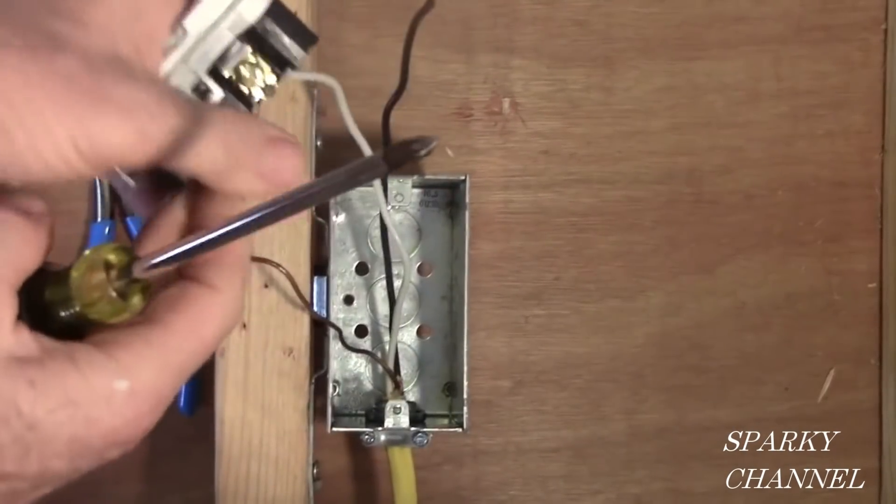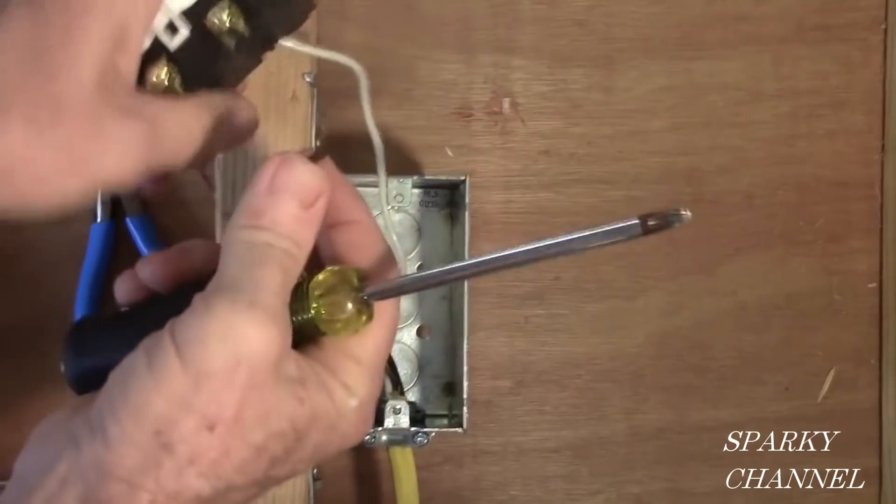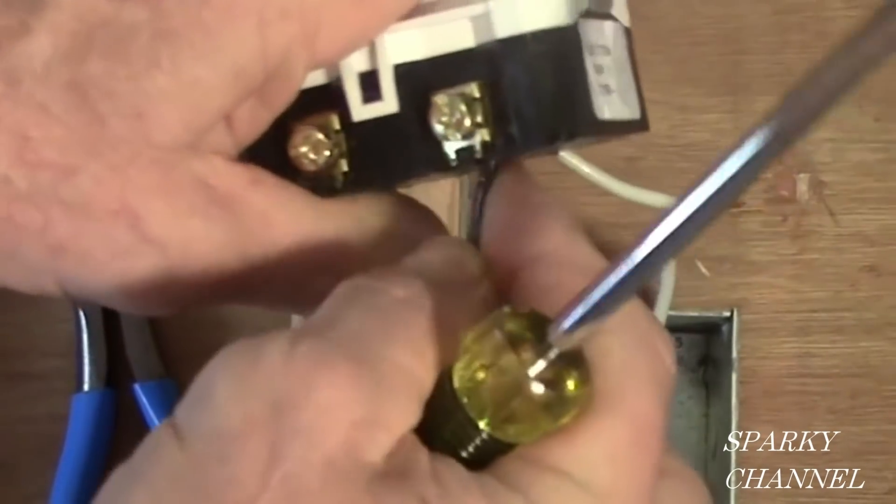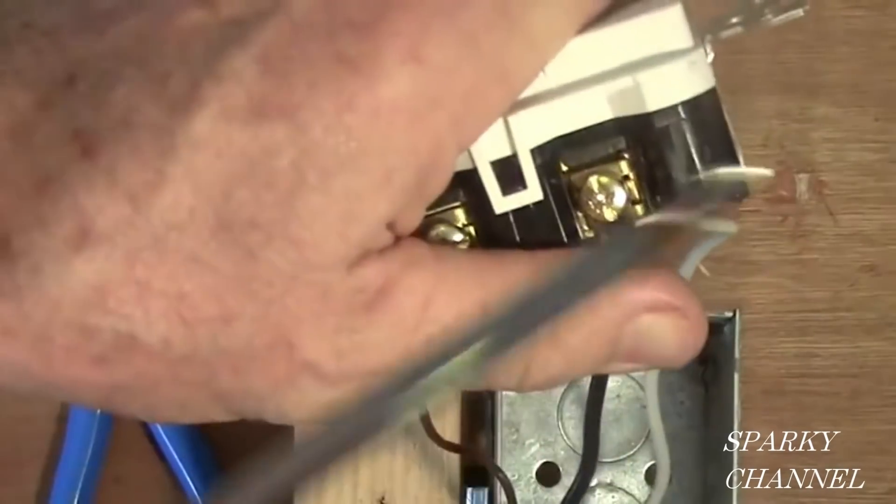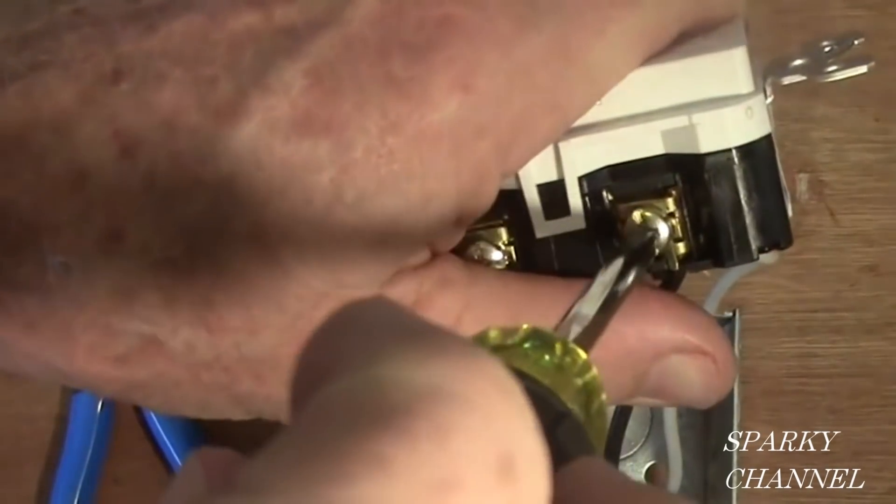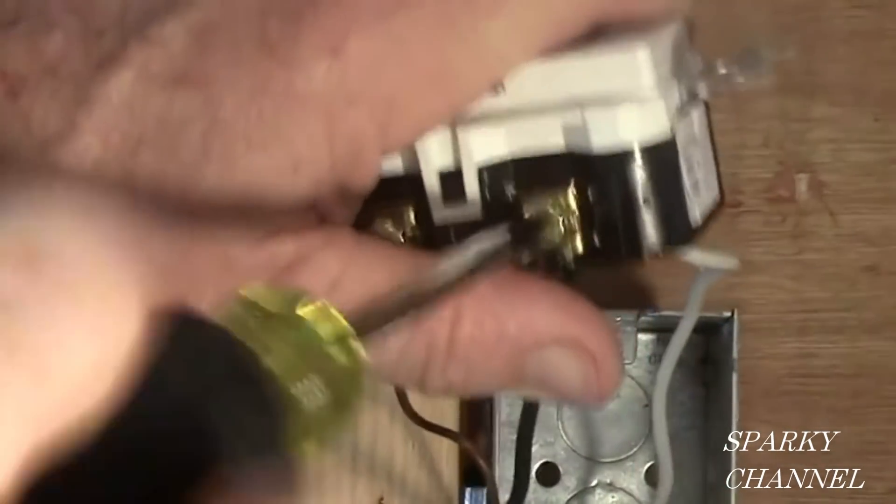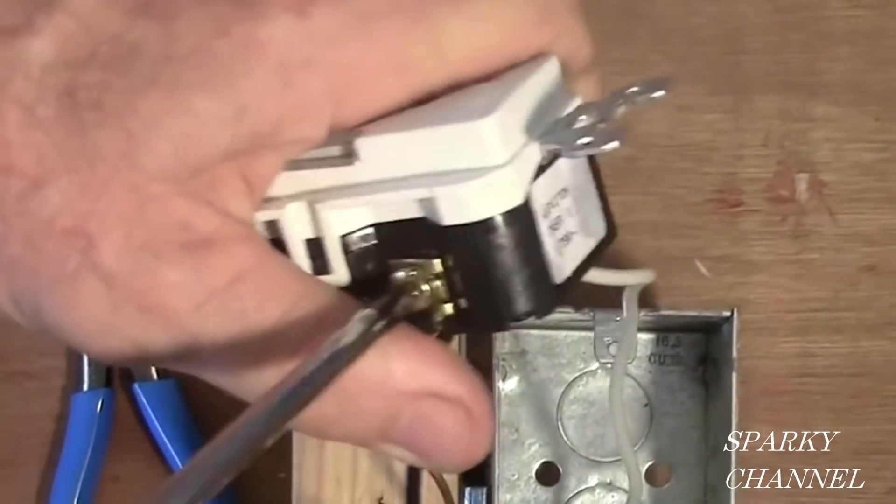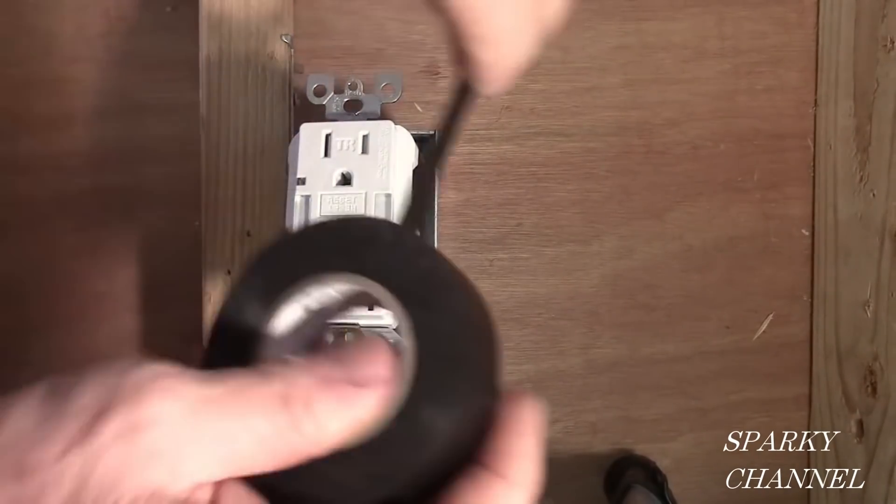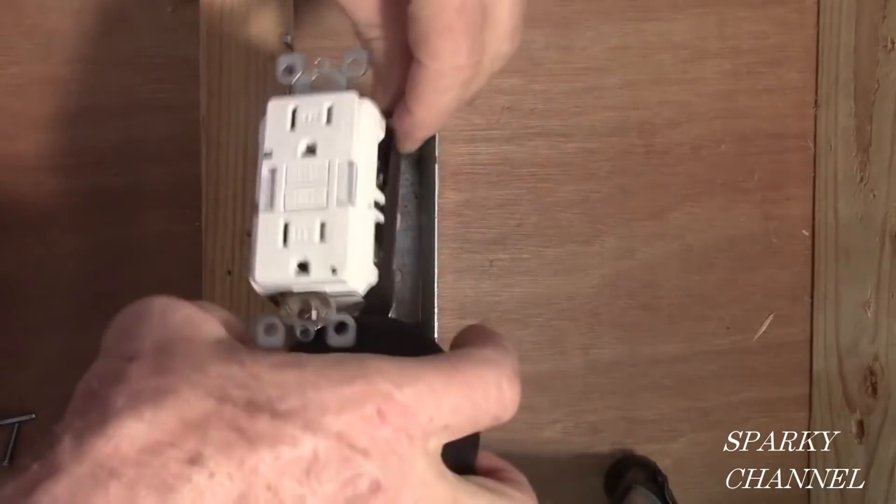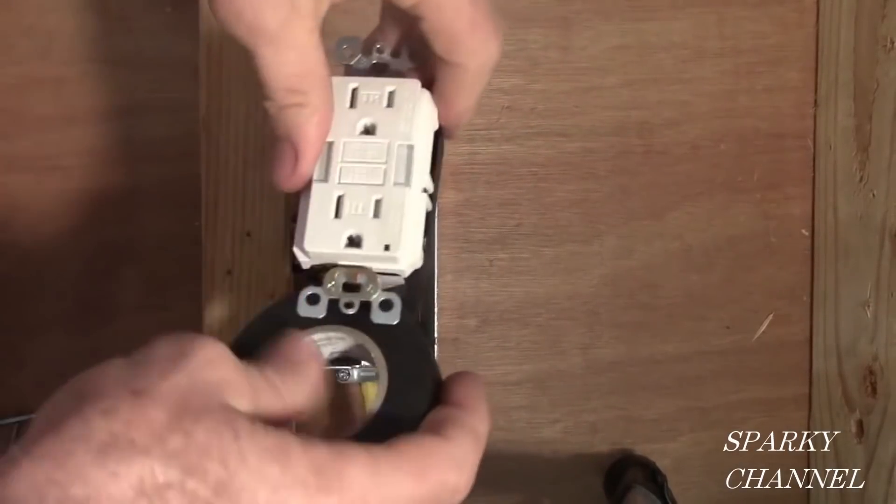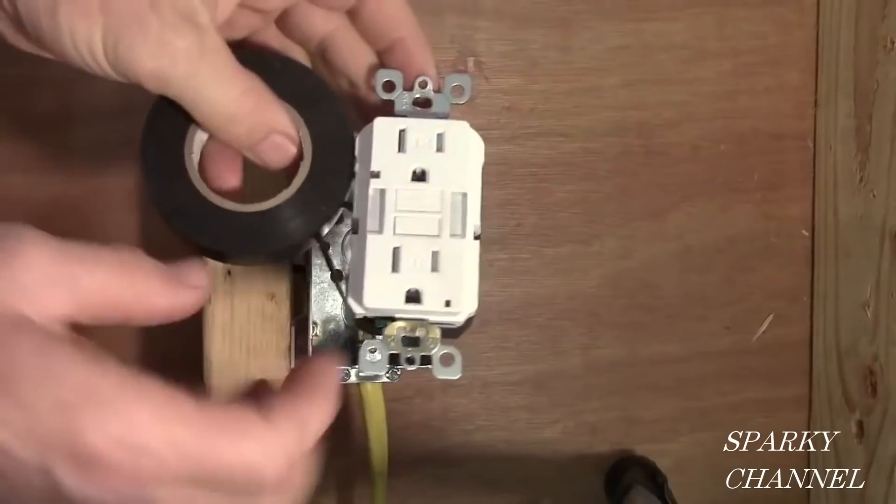So now we're going to take the black hot lead and put it underneath the brass screw of the line side of the ground fault circuit interrupter. Now I'm just going to put some electrician's tape around the receptacle for a little extra protection.